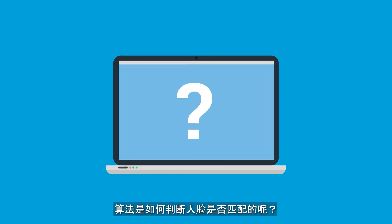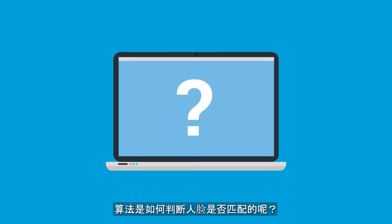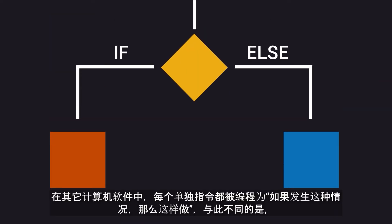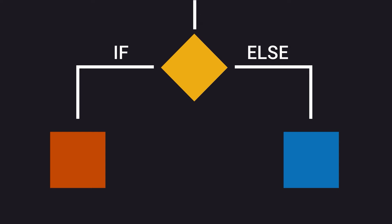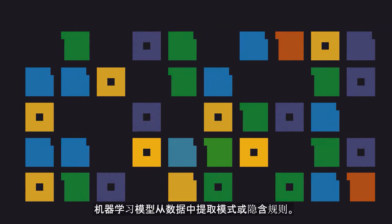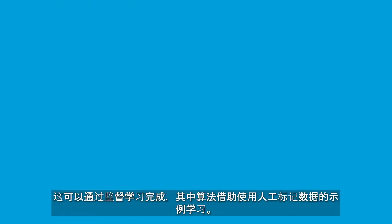But how can these algorithms know if the faces match or not? In contrast with other computer software where each individual instruction is programmed — if this happens, then do this — machine learning models extract patterns or implicit rules from data.